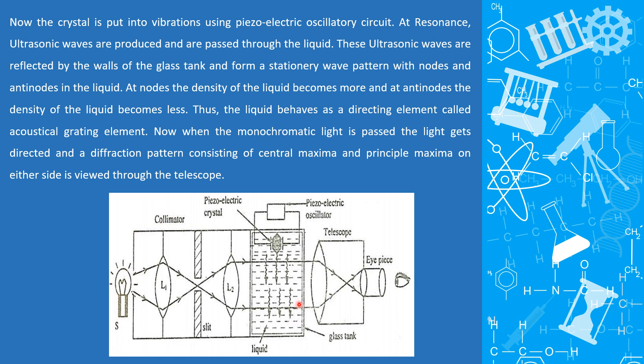At nodes, the density of the liquid becomes more. At antinodes, the density of the liquid becomes less. This liquid acts as a diffracting element called acoustical grating element.